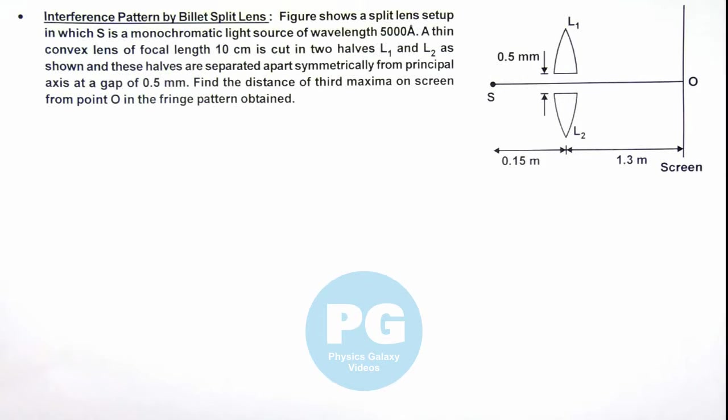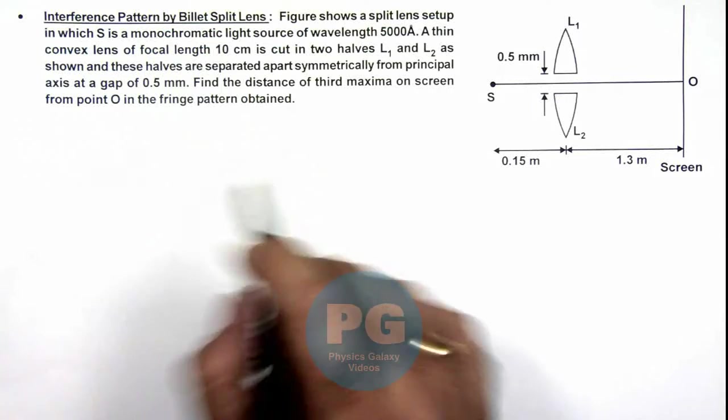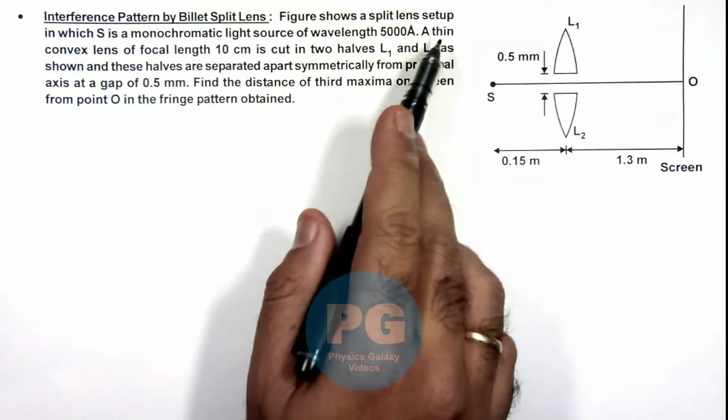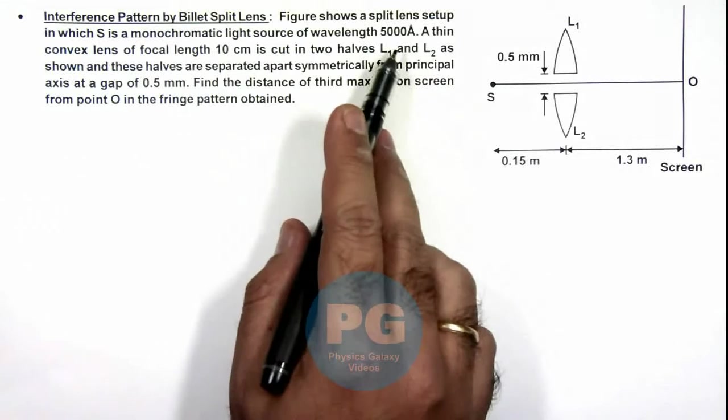In this illustration we'll analyze the interference pattern by Billet split lens. Here the figure shows a Billet lens setup in which S is a monochromatic light source of wavelength 5000 angstrom.